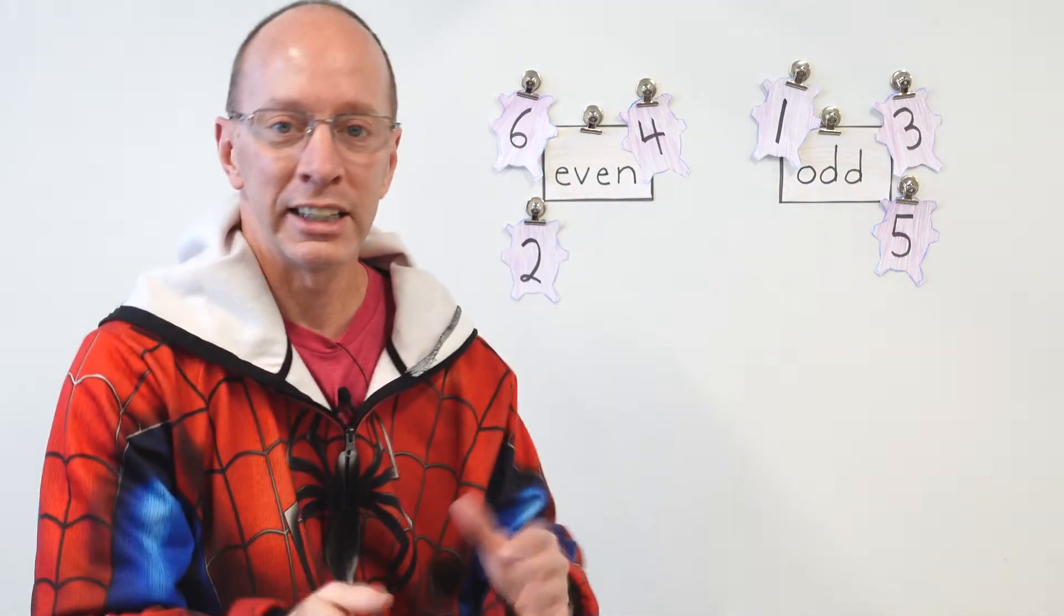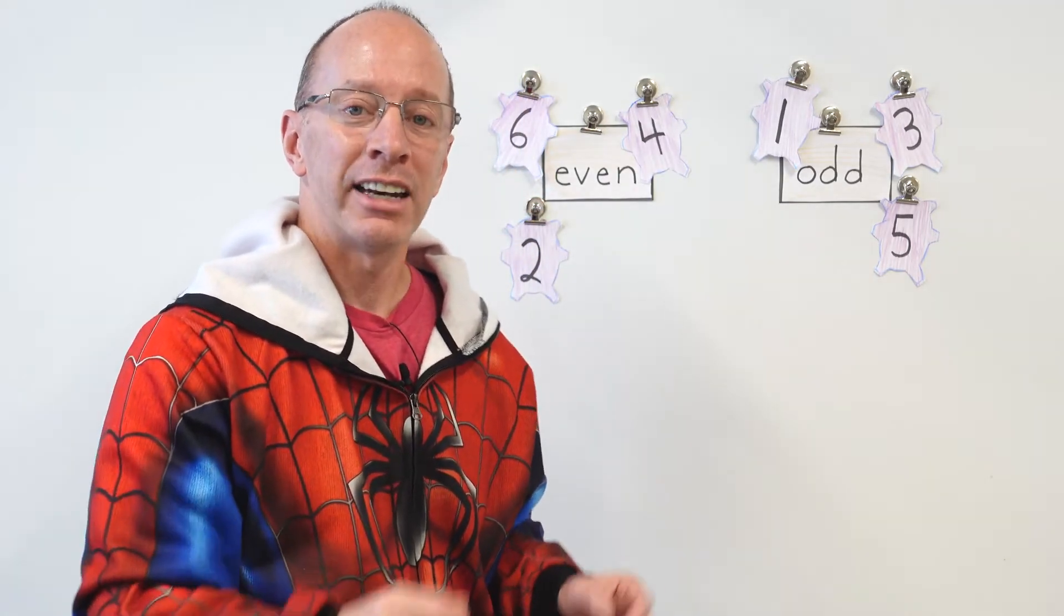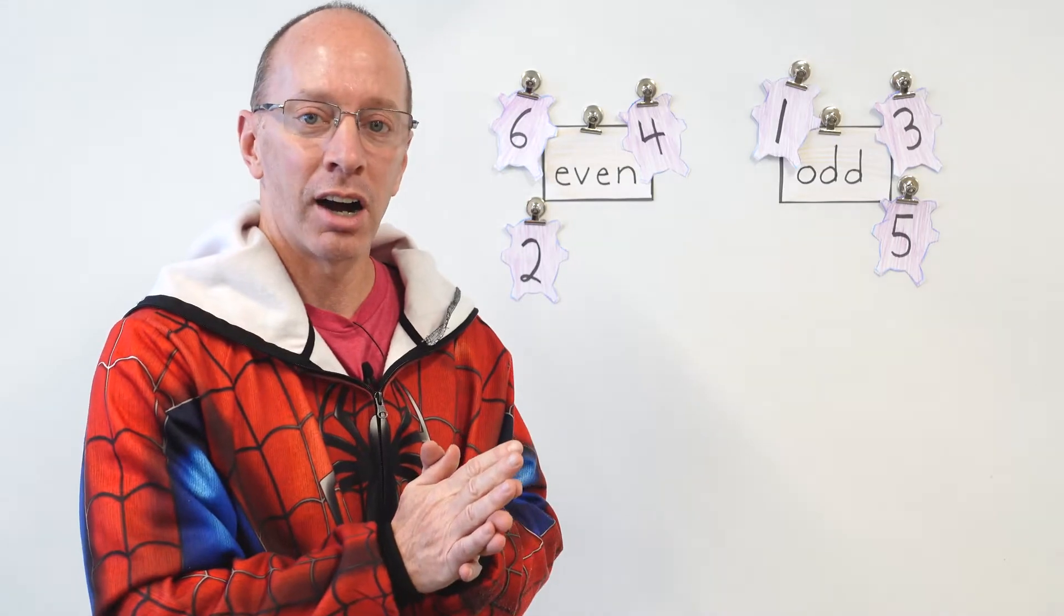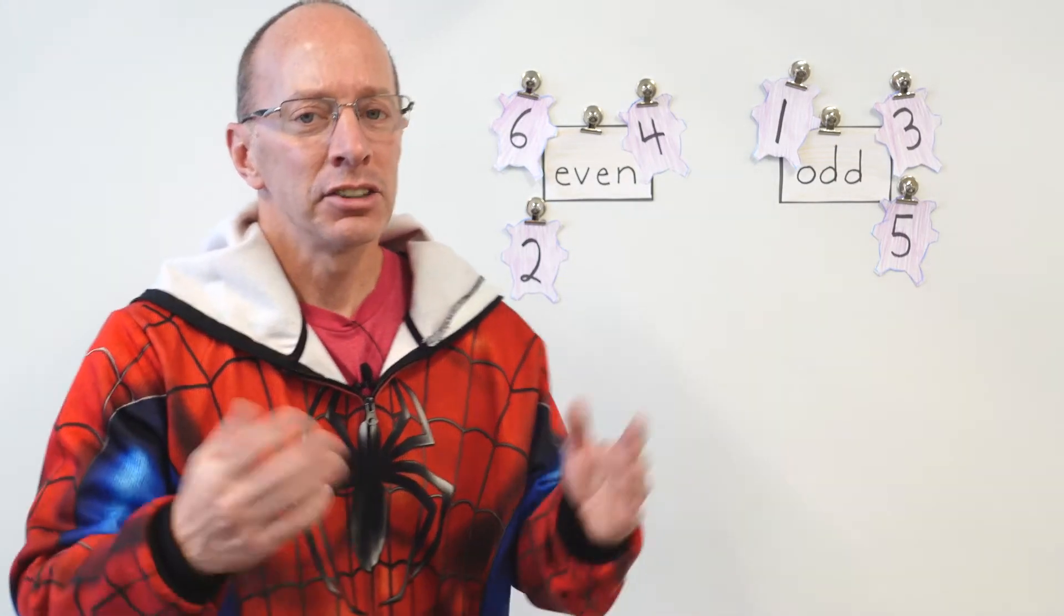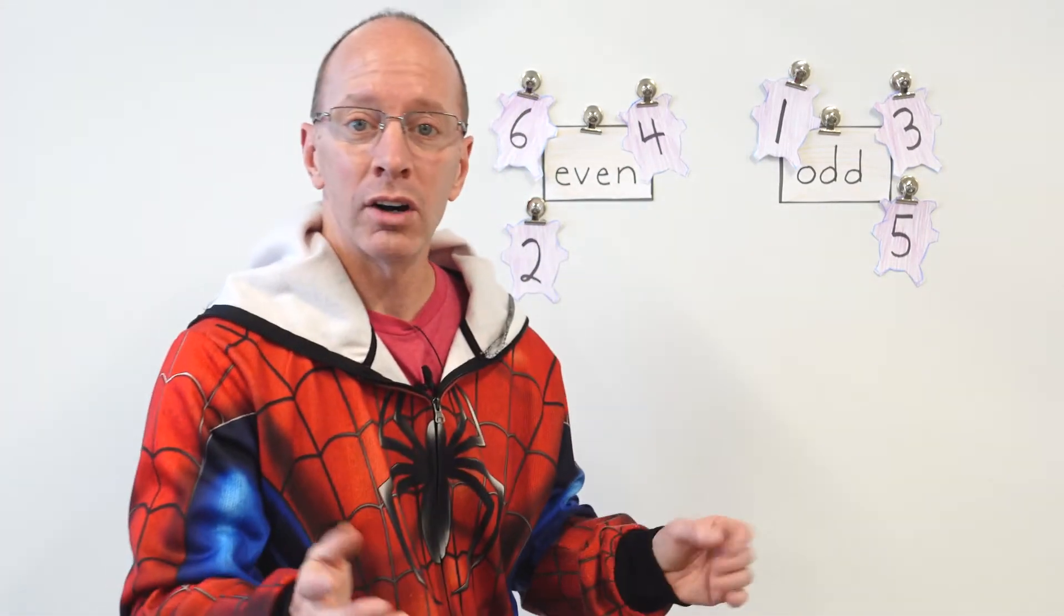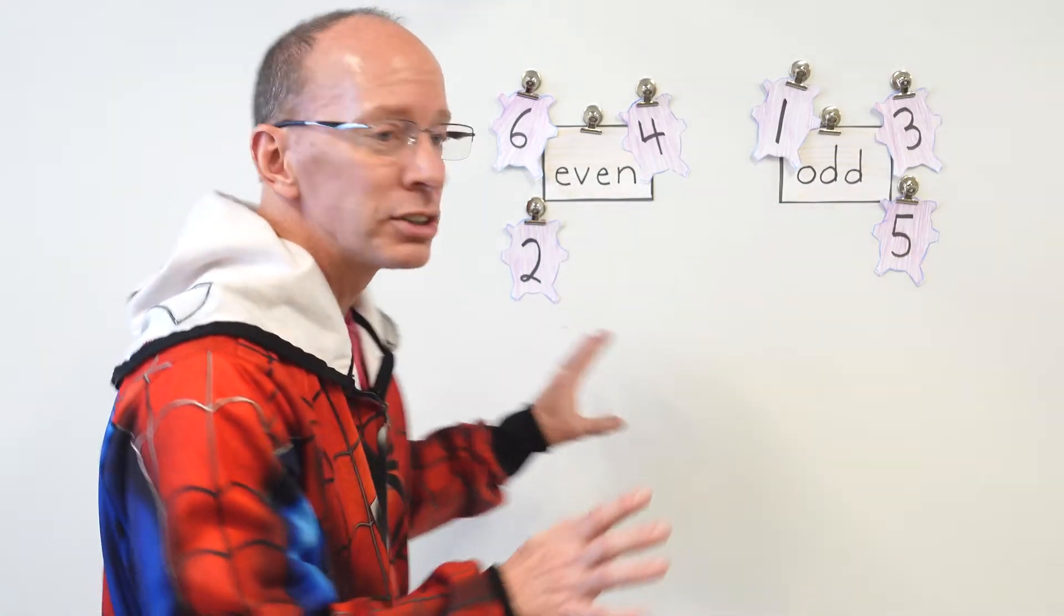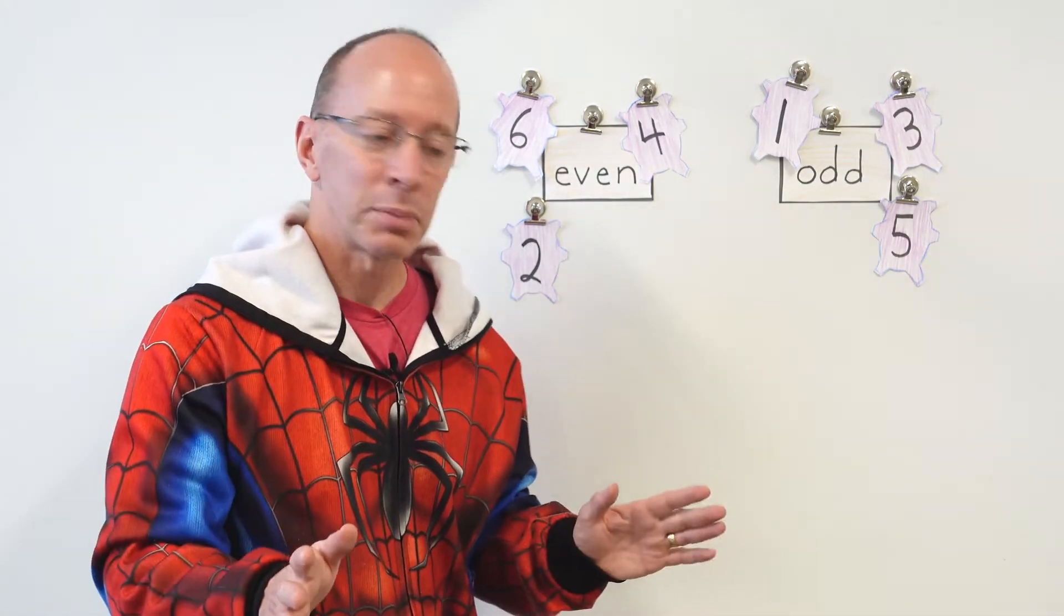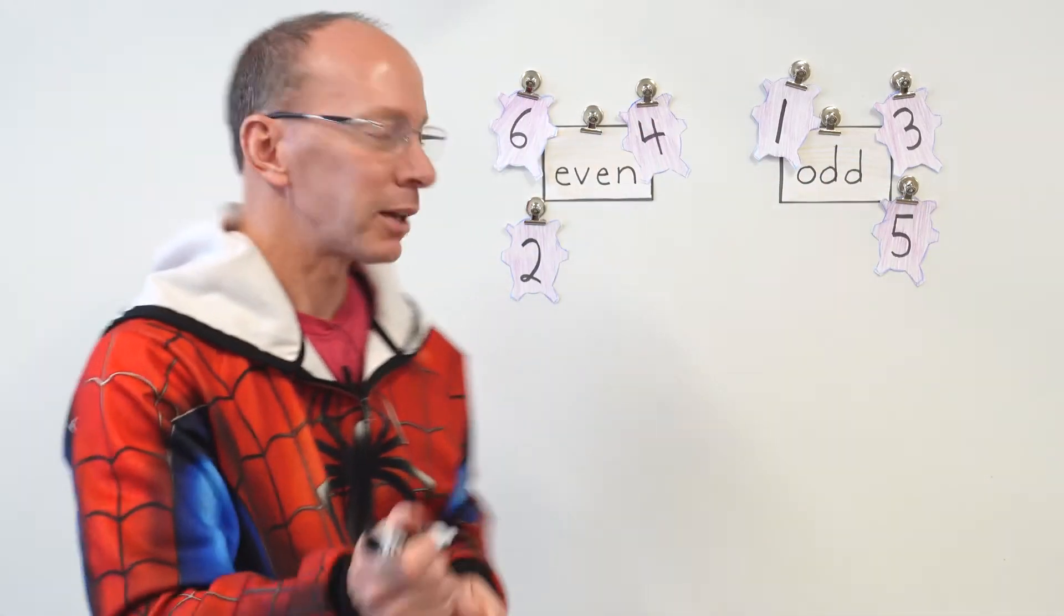So once again, just to review, our even numbers are 0, 2, 4, 6, 8, and our odd numbers are 1, 3, 5, 7, and 9. So maybe you're asking yourself, hey, what about the bigger numbers like 12 or 13 or 54? What we do is we look in the 1's place. Let me get my marker right here. We look in the 1's place.